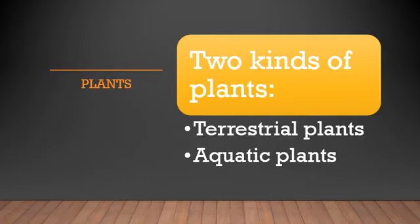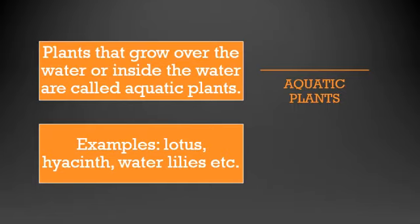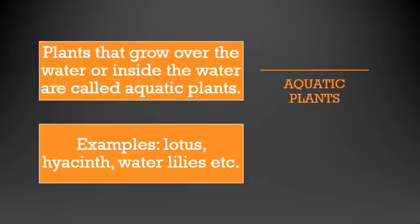Let's see what are aquatic plants and what are terrestrial plants. First, we are going to see what are aquatic plants. What are aquatic animals, children? The animals which live in water are called aquatic animals. Same way, the plants that grow over the water or inside the water are called aquatic plants. These plants are special because they grow in the water. The examples of aquatic plants you have to remember are lotus, hyacinth, and water lilies.